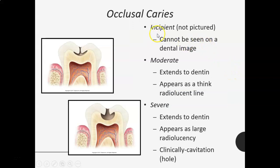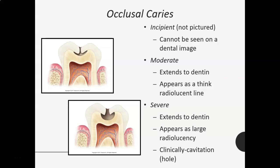Occlusal caries — incipient is not visible on a radiograph because it would only be broken into the enamel and not reached the dentin. You might see it visually when looking at the tooth, especially with chalkiness or dark staining in the grooves, pits, and fissures. Moderate occlusal caries will extend down into the dentin and appears as a thick radiolucent line under the enamel. Severe extends further into the dentin appearing as a large radiolucency that fans out, and often there'll be a cavitation — a hole in the top of the tooth.